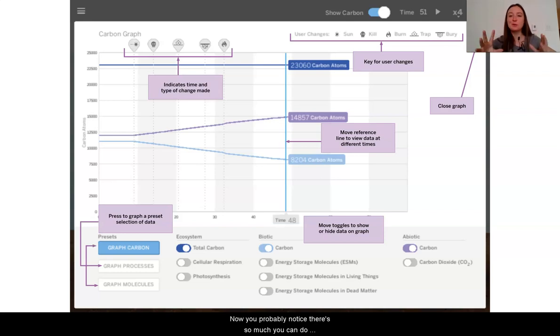Now, you probably noticed there's so much you can do, so it could be overwhelming to have all of that data on the screen. That's why it's helpful to click on the toggles on and off to show the different things that you want to see. If you want to see specific types of biotic organisms or abiotic organisms, then you can click on these different things. You also are able to see places where you did different things in the digital model, like click kill or burn, and so we can go back to those moments and understand what happened.